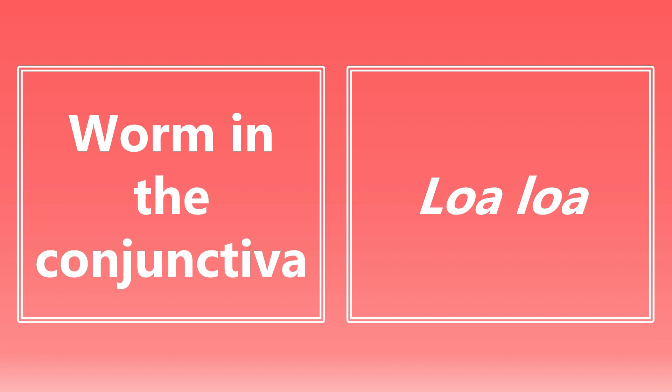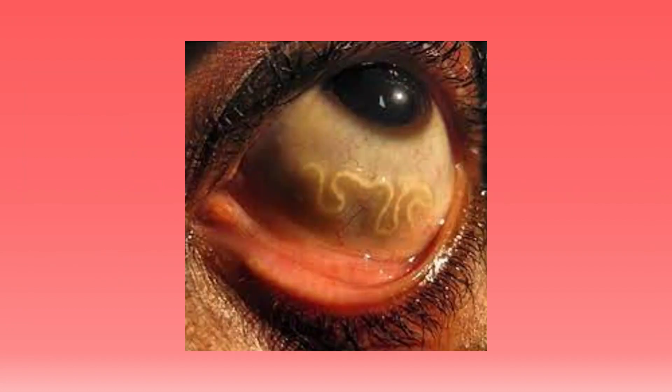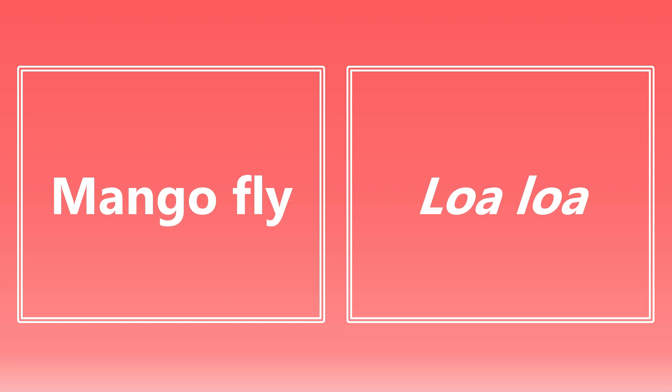Just in case you need the visual cue, this is loiasis — that worm in the eyeball, in the conjunctiva. So if you see anything like this on the exam, the immediate association should be loa loa. The mango fly — you should know this as well, because this is going to be the vector for loa loa. Very important to know that.